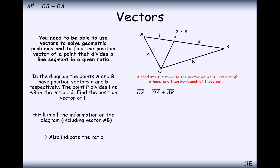A good place to start is to write down what we want to find out. We want to find the position vector of P — the vector from O to P in terms of a and b. To get to P, there's no direct route, so we're going to go to A first and then from A down to P. That gets us from O to P, and we add these two red line vectors together.